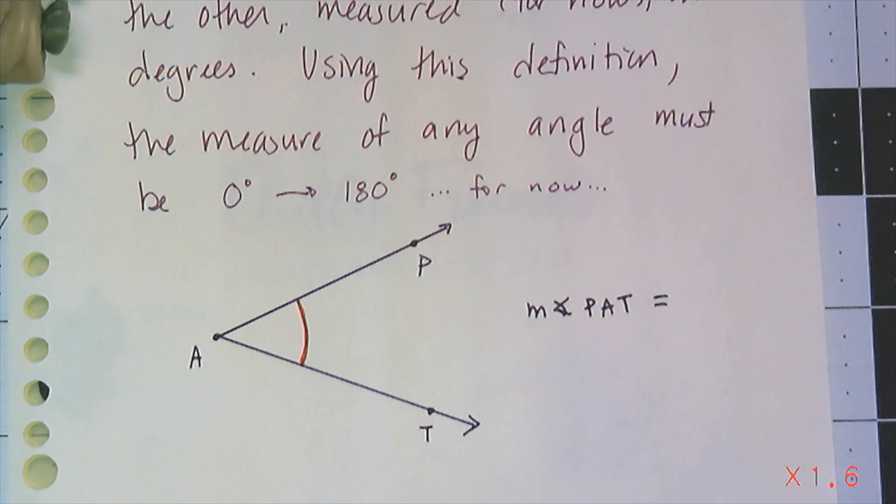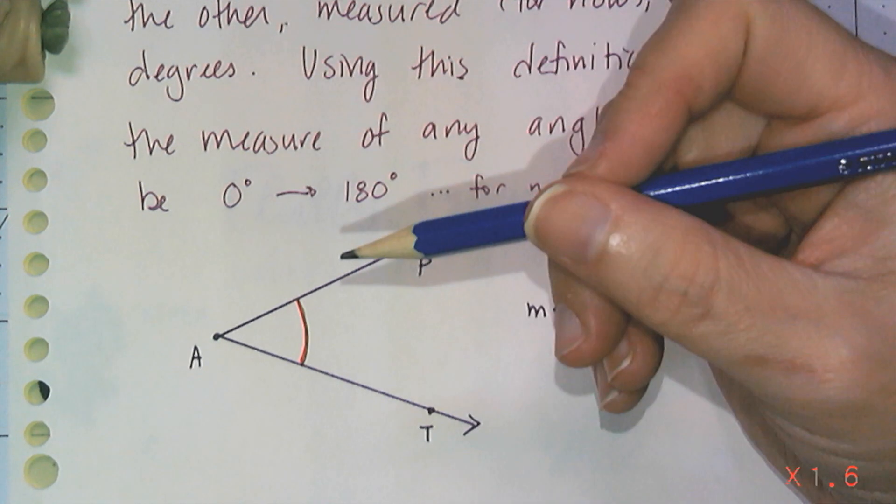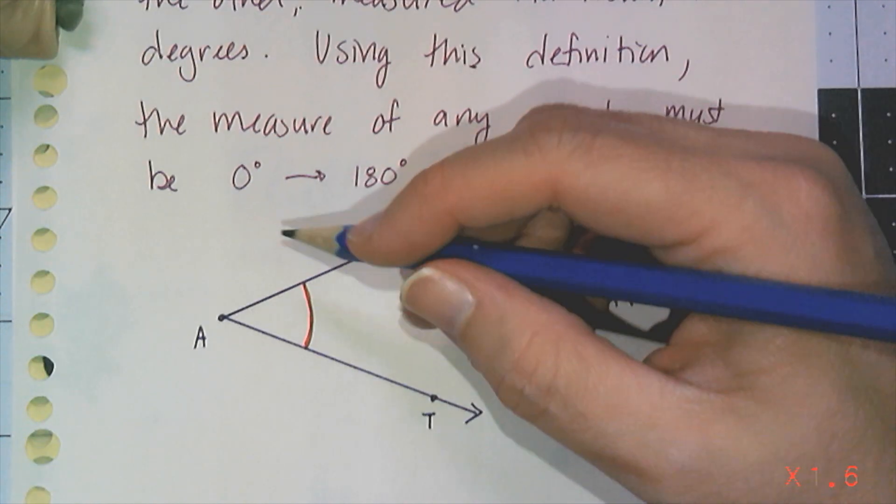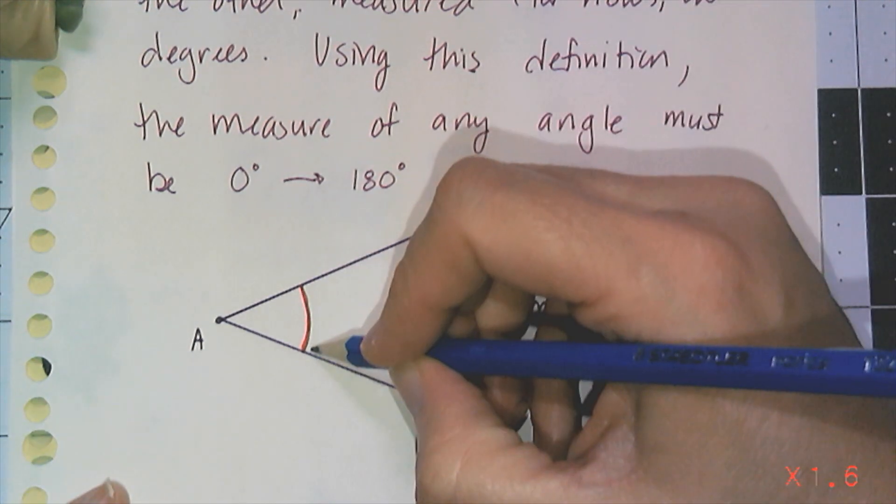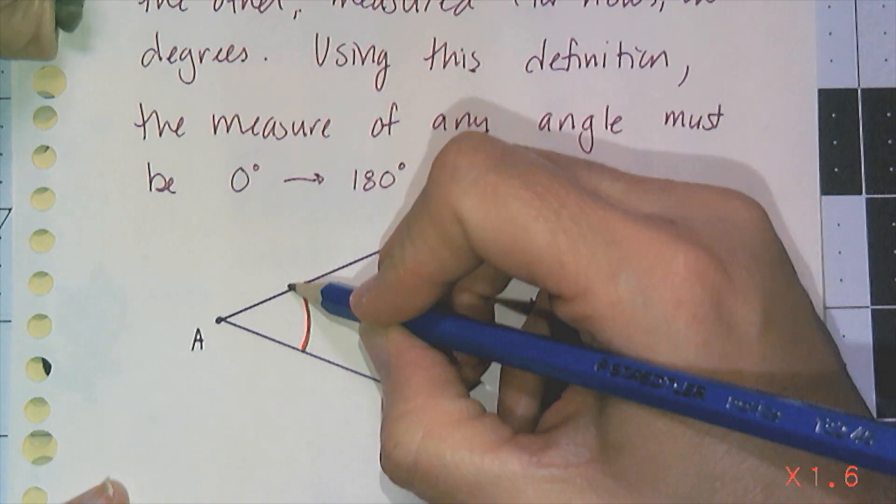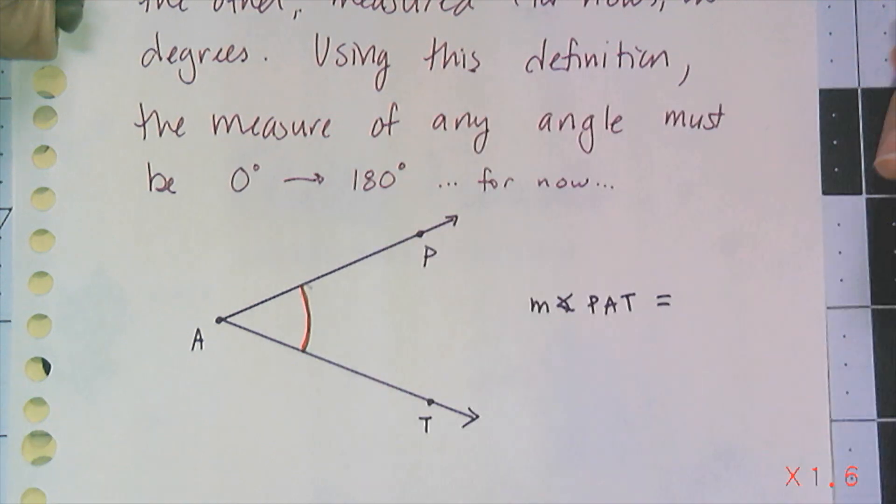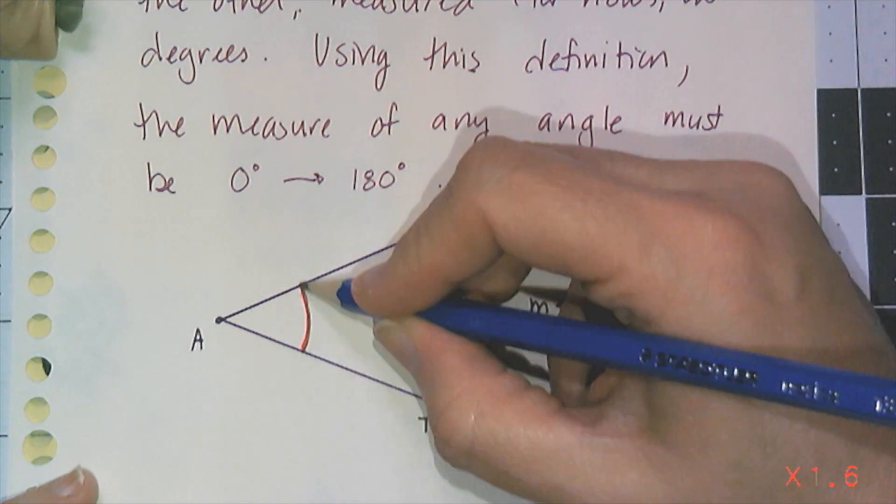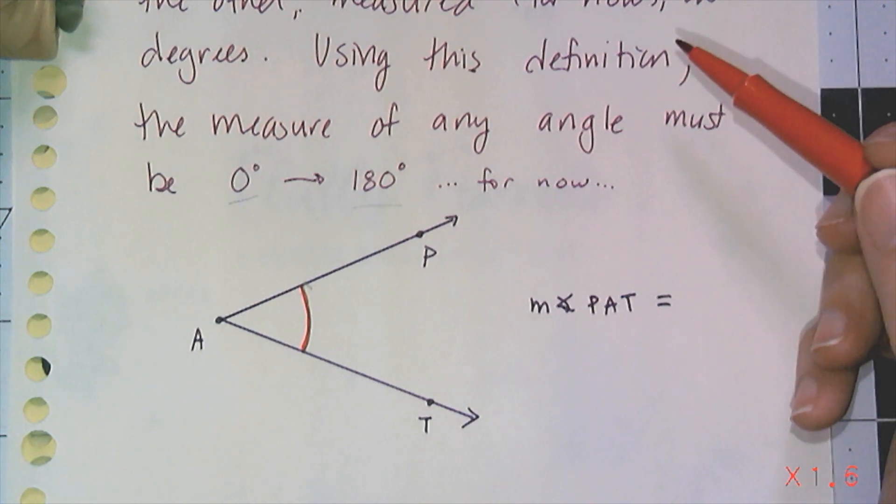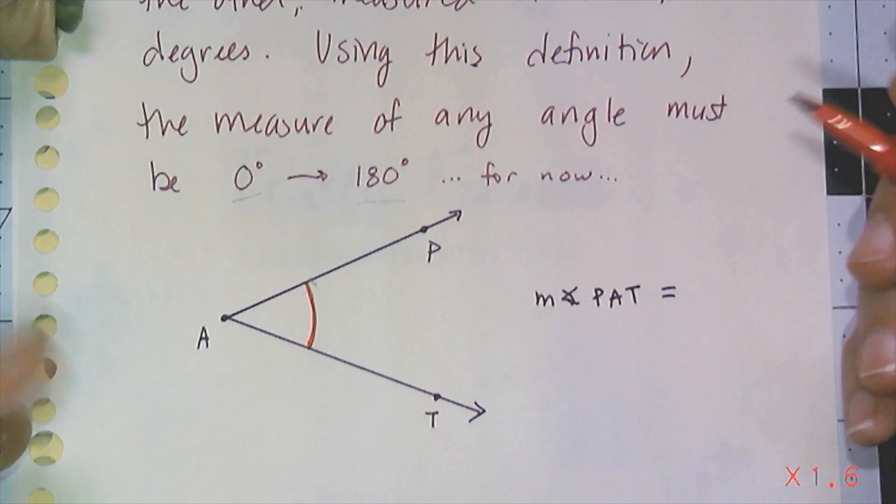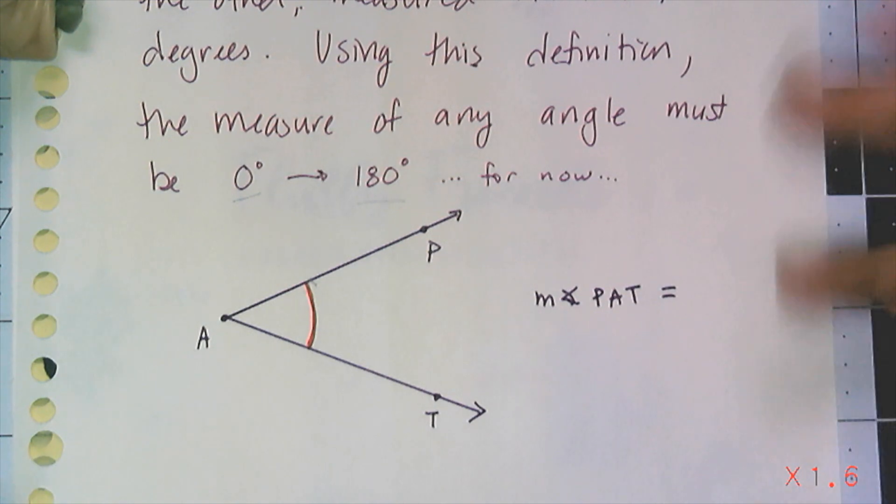Later on, when you get to trigonometry and you look at directed angles, meaning angles that flow in a certain direction and the direction becomes part of it, whether it goes from this direction or goes from the other direction, later on you're going to look at the outer part. But in geometry, we're strictly smallest distance there. So our angle measures are always going to be between 0 and 180. And I said measured in degrees for now, because once again, when you get to trigonometry, you realize that angle degrees are kind of annoying, and you're going to use something else called a radian, which is actually I find a lot easier to work with.